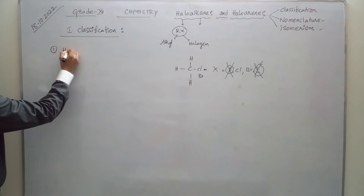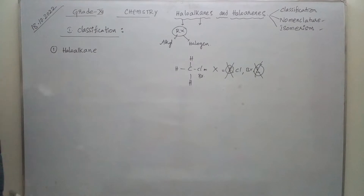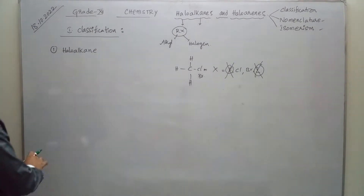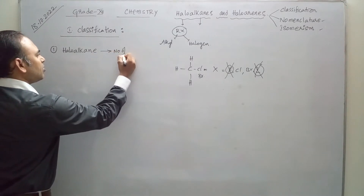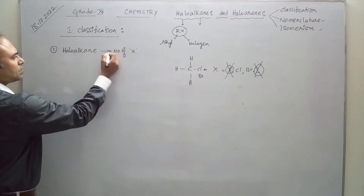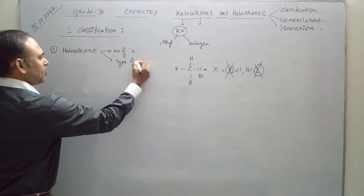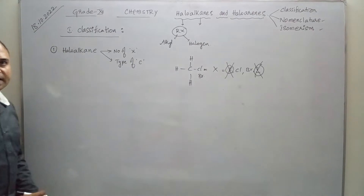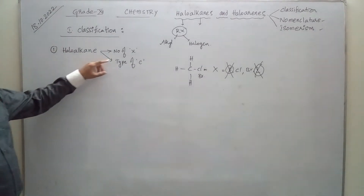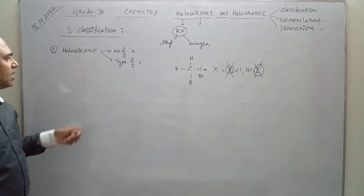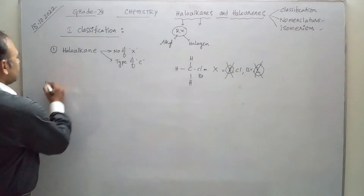First we can study about haloalkanes. Haloalkanes can be classified based on the number of halogens, and the second classification is based on the type of carbon to which the halogen is attached. When classifying haloalkanes, we consider how many halogens are there and what is the nature of the carbon.